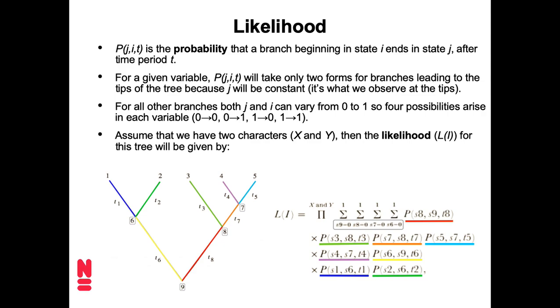the one that is underlined in red. So that says the probability, just in general, one of these terms is the probability that a branch beginning in state i ends in state j after time period t. And in this particular case, so that's the probability of a branch starting at whatever is the state at node 9, the root, then changing into whatever is the state at node 8 along branch length t8.